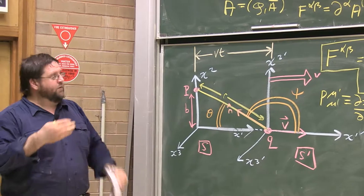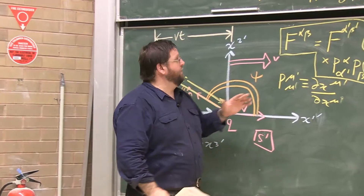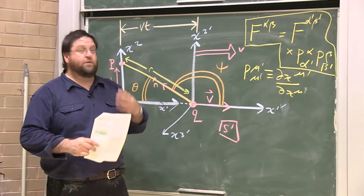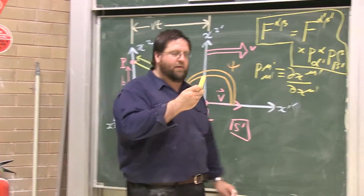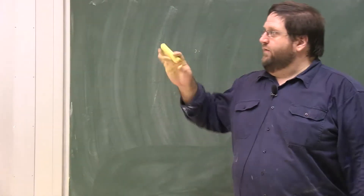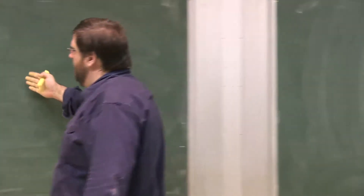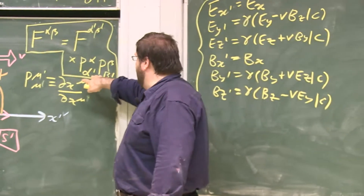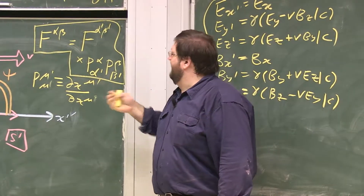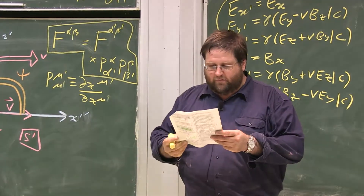Having deduced these transformation laws, I re-emphasise an important point: electric and magnetic fields in a sense have no independent existence. Electric field can vanish in one frame; magnetic field can vanish in one frame but not in another. Rather than speaking of electric and magnetic fields as having independent existence — these things are relative objects — we instead work with a Faraday tensor, which is also frame-dependent but transforms as a tensor and is therefore a geometric object.